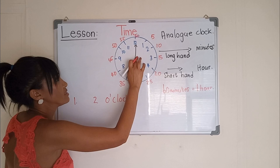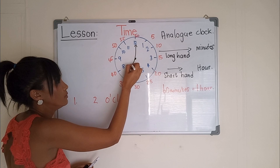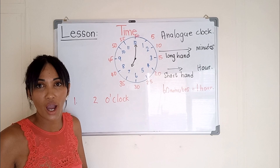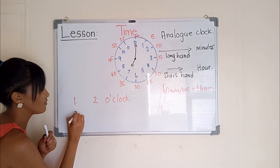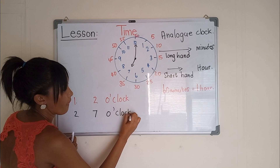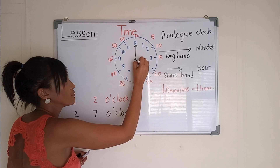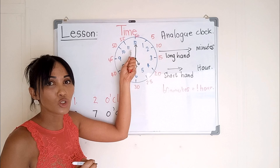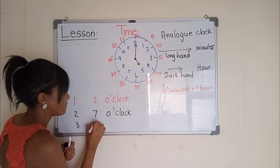If I erase this and I want to know what the time is now, you look at where your short hand is to find out your hour. The short hand is on my seven, so this is seven o'clock. Let's do another one. We need to find where our short hand is — my short hand is on the five, and the long hand is on the twelve. So this time is five o'clock.